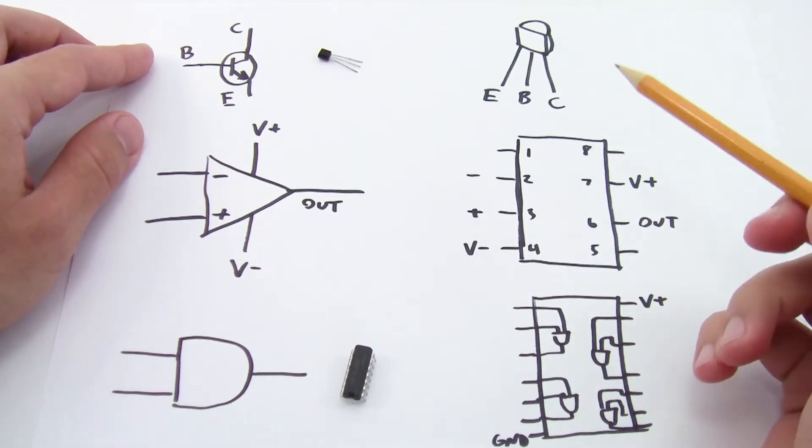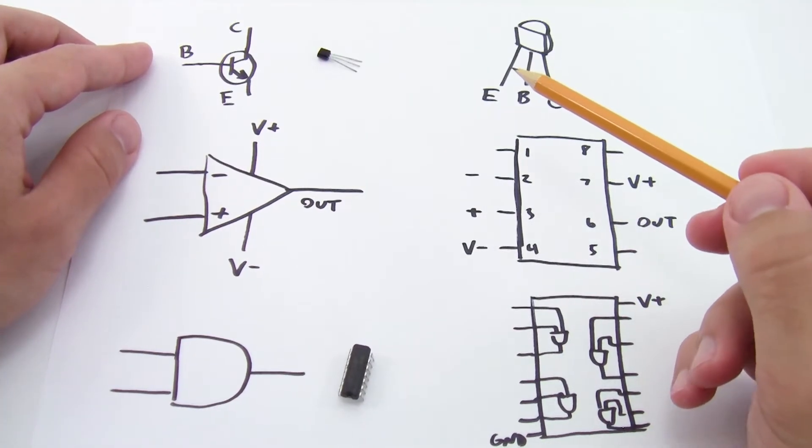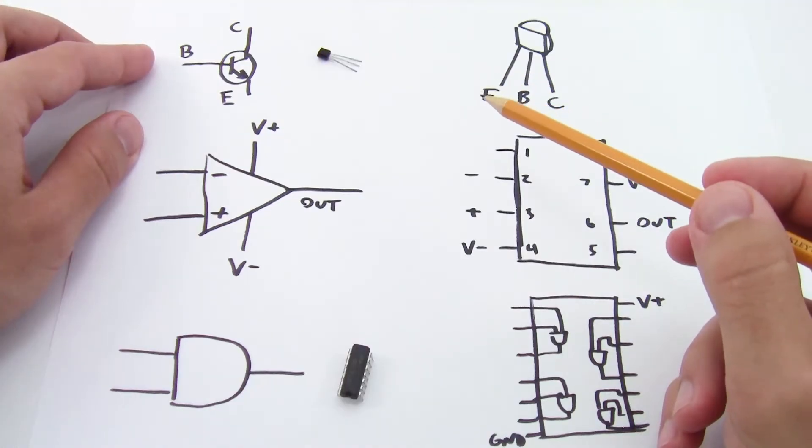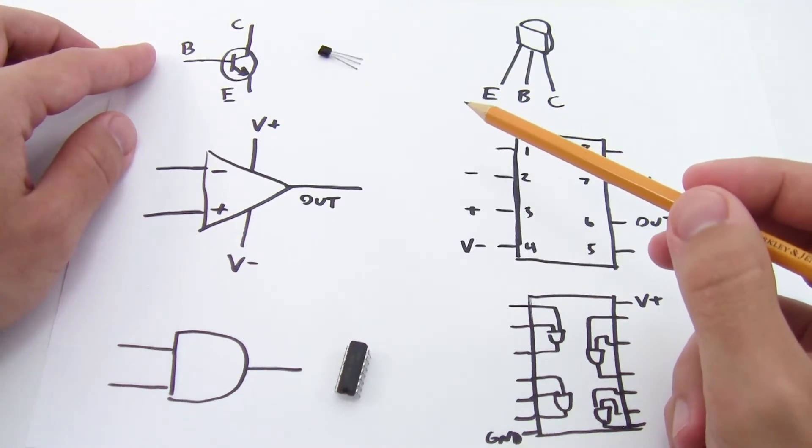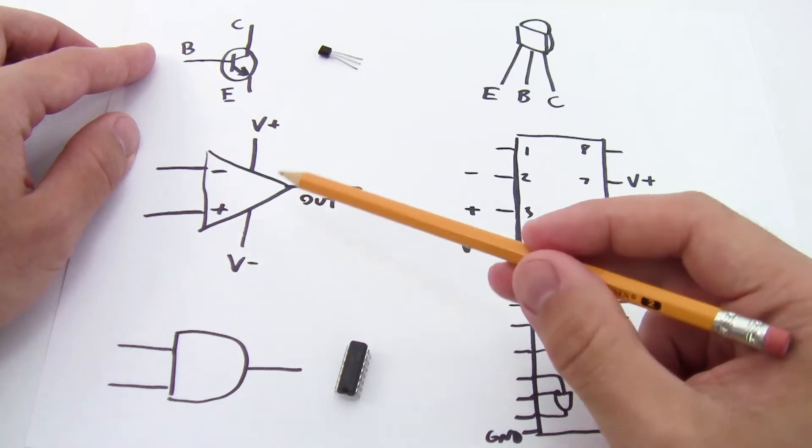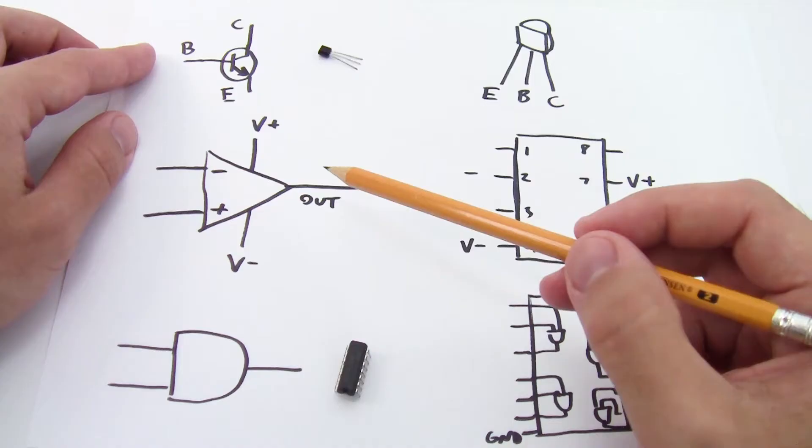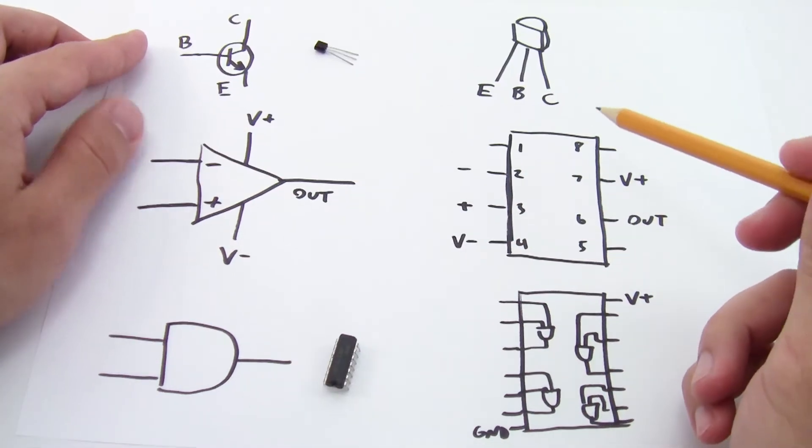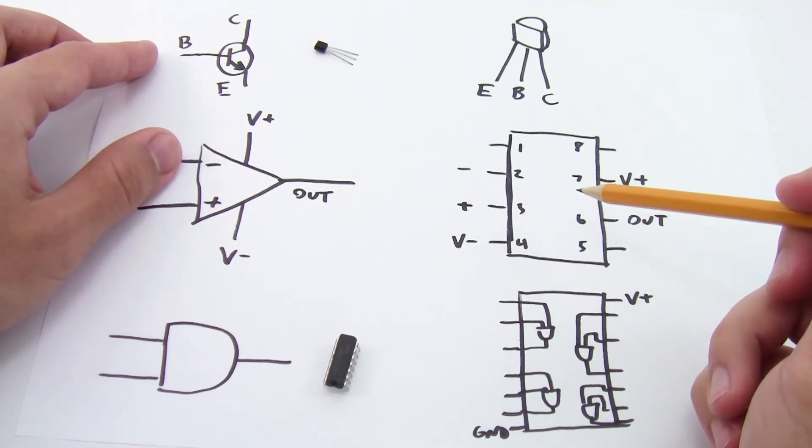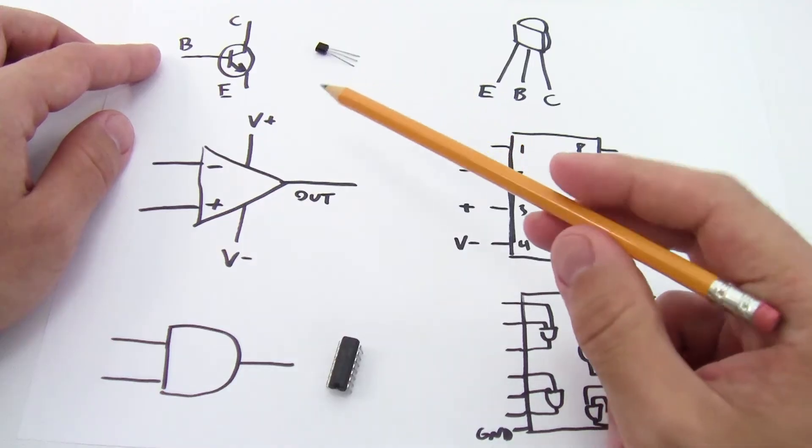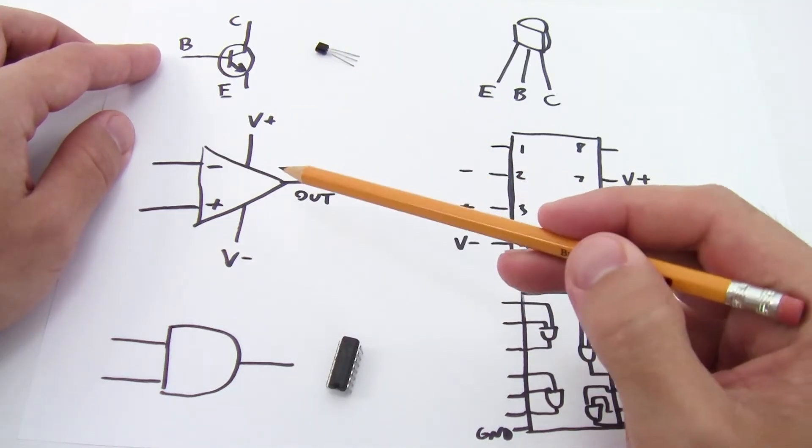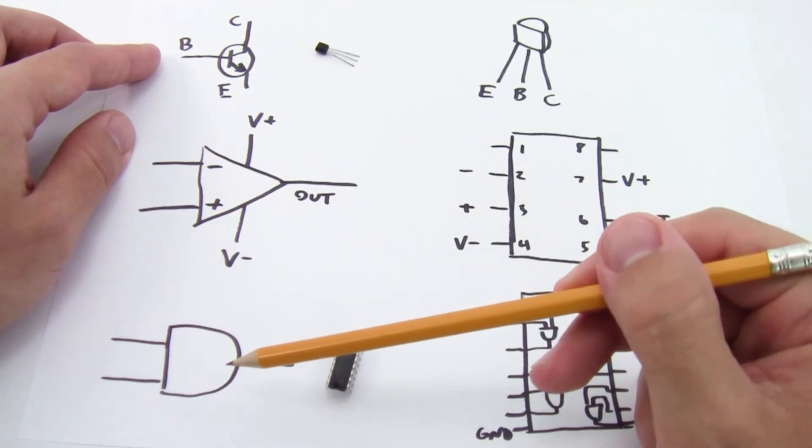Where you really have to be careful is when you get to more advanced circuits with components that have more than two leads, because you will frequently run into things where the circuit symbol or what you would use when drawing a circuit diagram looks very little or absolutely nothing like the physical thing that you would put in a breadboard. So I have three examples here: a transistor, an operational amplifier, and an AND gate.